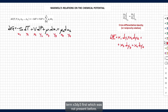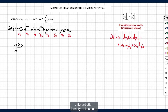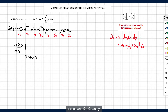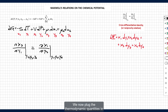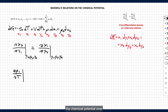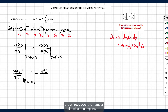We focus on the third term x3 dy3 first, which was not present before. The application of the cross differentiation identity to this case results in the equality between the partial derivative of x3 over y1 at constant y2, y3, and y4, and the partial derivative of x1 over y3 at constant y1, y2, and y4. Plugging in the thermodynamic quantities gives an equality between the partial derivative of the chemical potential over temperature at constant pressure and number of moles, and the negative of the partial derivative of entropy over the number of moles of component 1 at constant pressure, temperature, and number of moles.